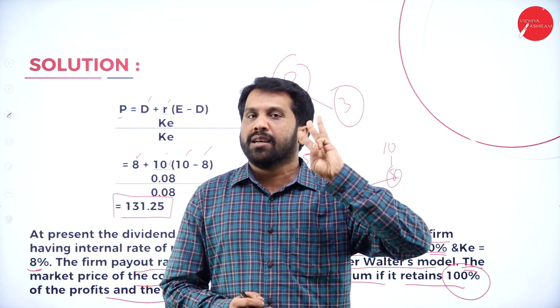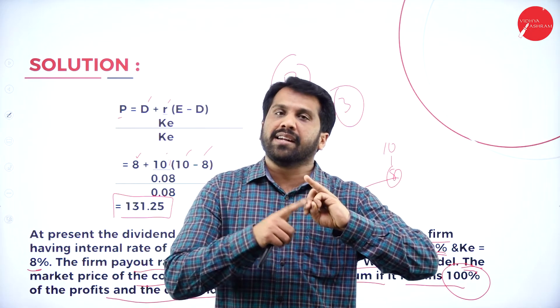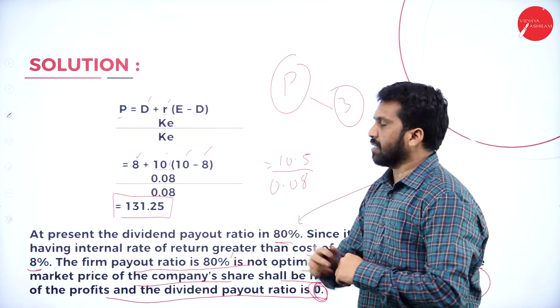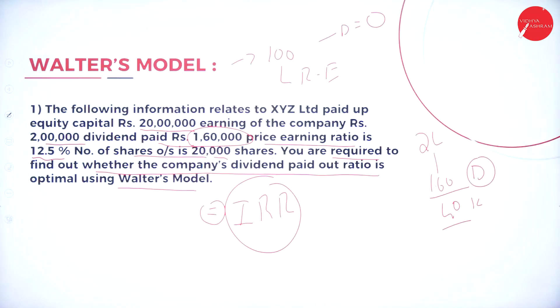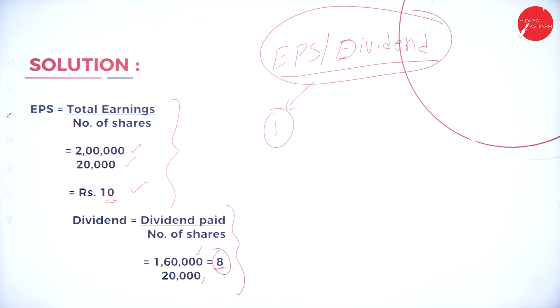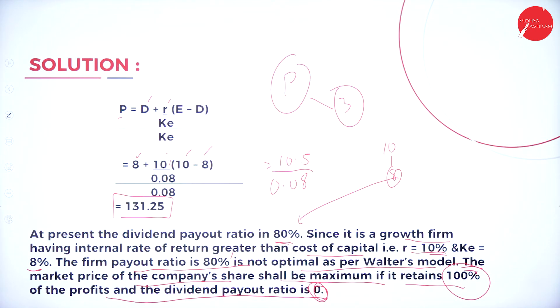You have to remember three formulas: one for earning per share and dividend, second for cost of equity, and third for present value of share price. This is all about today's session on Walter's model. Please work out this problem at home, and we will do more problems on Walter's model and Gordon's model. You will understand better with similar practice problems. Thank you.